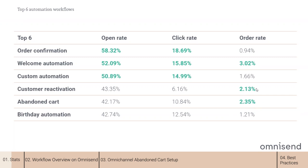In Omnisend, we recommend beginning with at least three automation workflows: welcome, abandoned cart, and order confirmation, and later adding customer reactivation and custom workflows. More about those in best practices today.